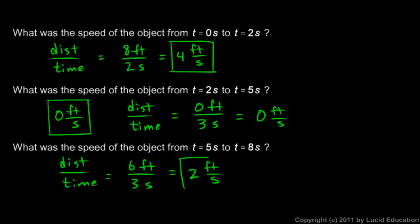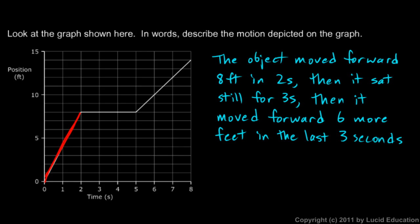Six feet divided by three seconds reduces to two feet per second. So during the first segment speed was four feet per second, and during the last segment it was two feet per second. The first segment is steeper on the graph, which matches the greater speed. In each calculation, speed over a time interval equals the slope of that segment: delta x over delta t is rise over run, and the slope of a position versus time graph is always the speed.